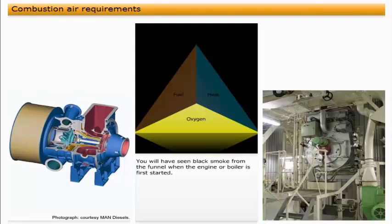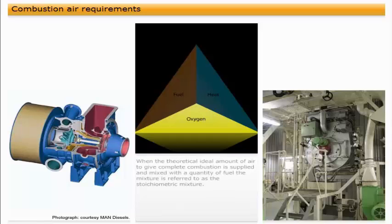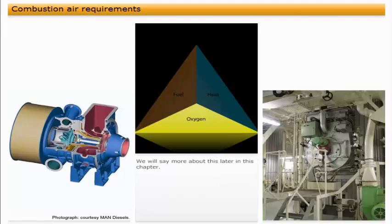You will have seen black smoke from the funnel when the engine or boiler is first started. This is usually due to the fact that insufficient air is being supplied at this stage for complete combustion. When the theoretical ideal amount of air to give complete combustion is supplied and mixed with a quantity of fuel, the mixture is referred to as the stoichiometric mixture. We will say more about this later in this chapter.